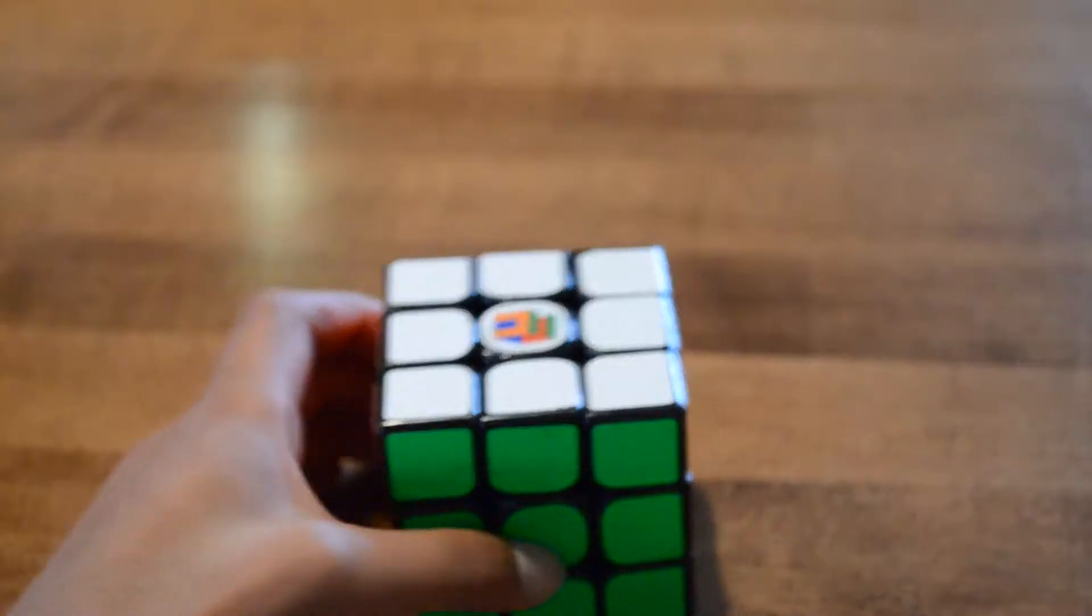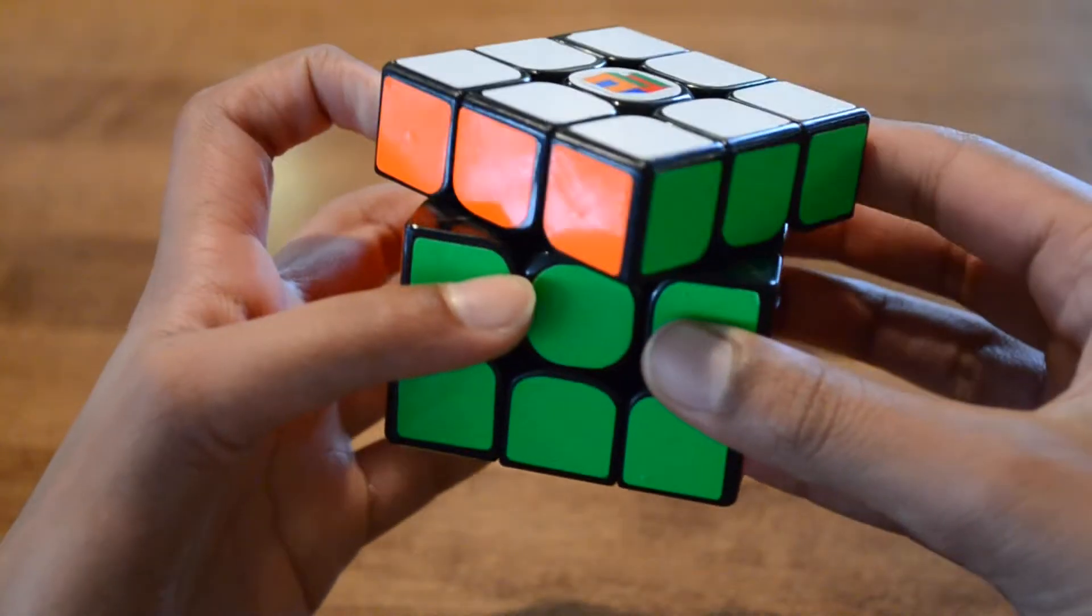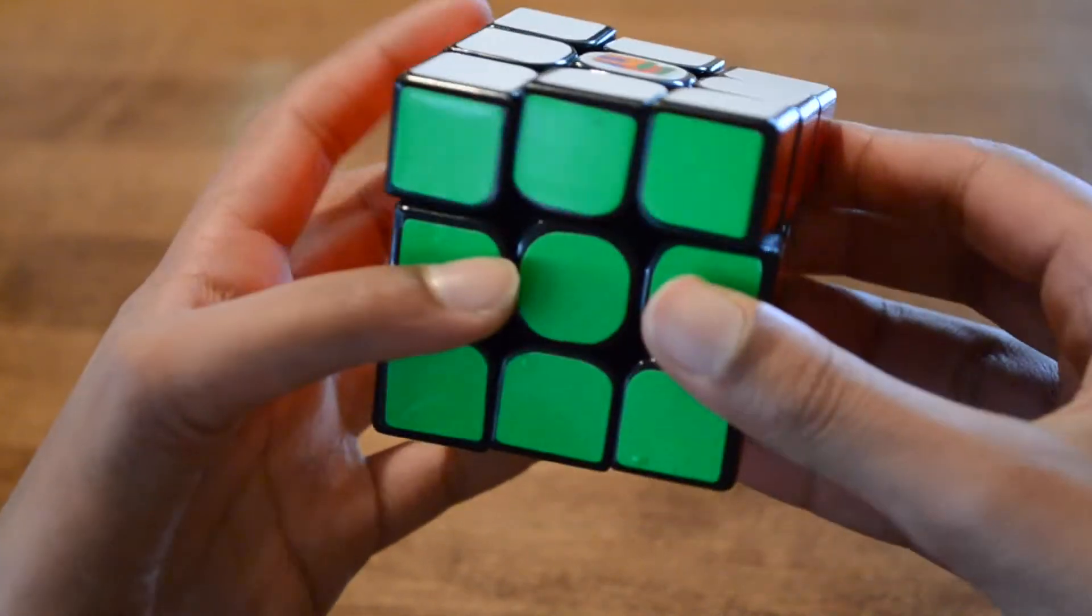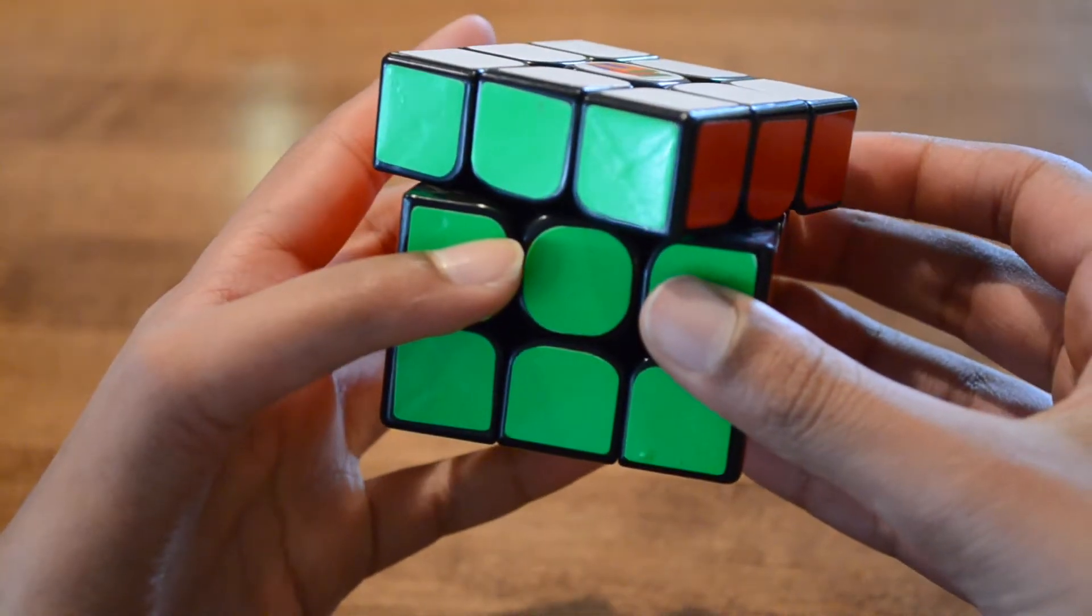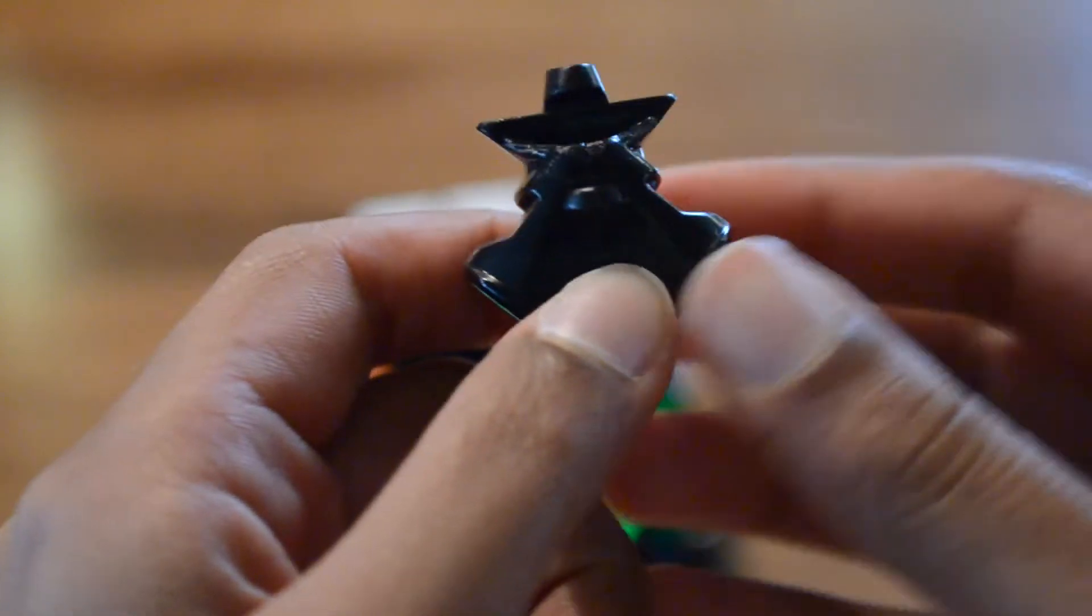The Yuxin 3x3 corner cuts over 45 degrees regular and nearly line to line in reverse. I really don't see why corner cutting is still relevant in reviews today, as it's basically the same now. The mechanism of this cube is really interesting.